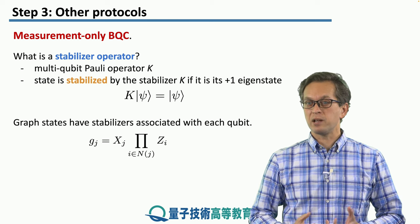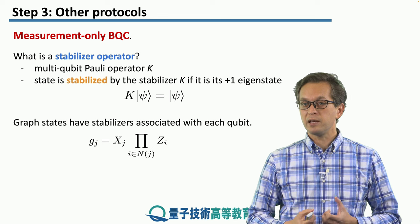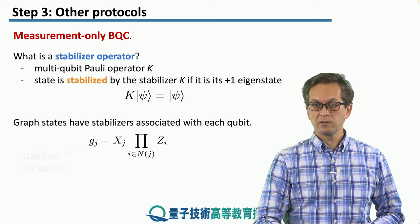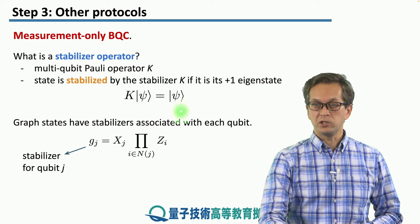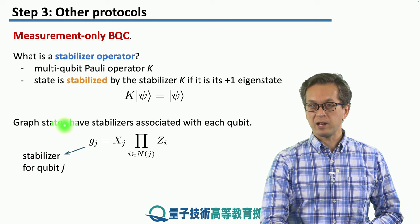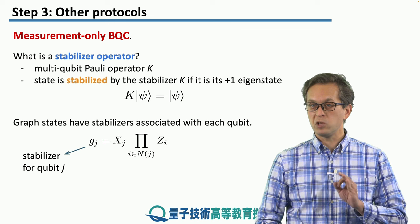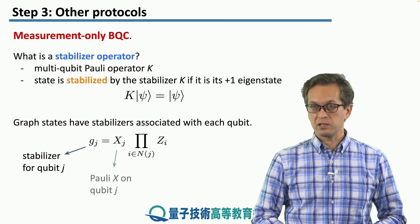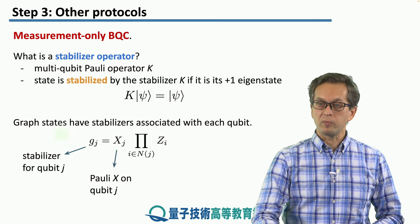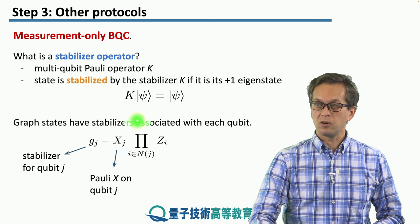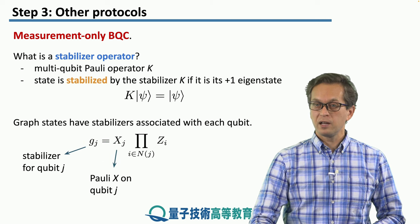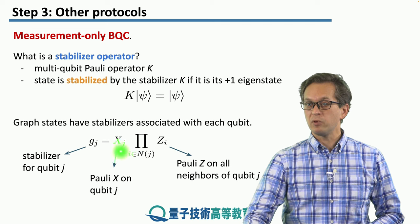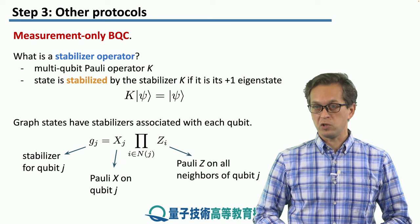Graph states are stabilizer states, meaning that they can be generated with the following stabilizer operators. Gj is the stabilizer operator associated with qubit j of the graph state. We apply the Pauli X operation on qubit j, and this expression means that we are applying Pauli Z to all the neighbors of qubit j.